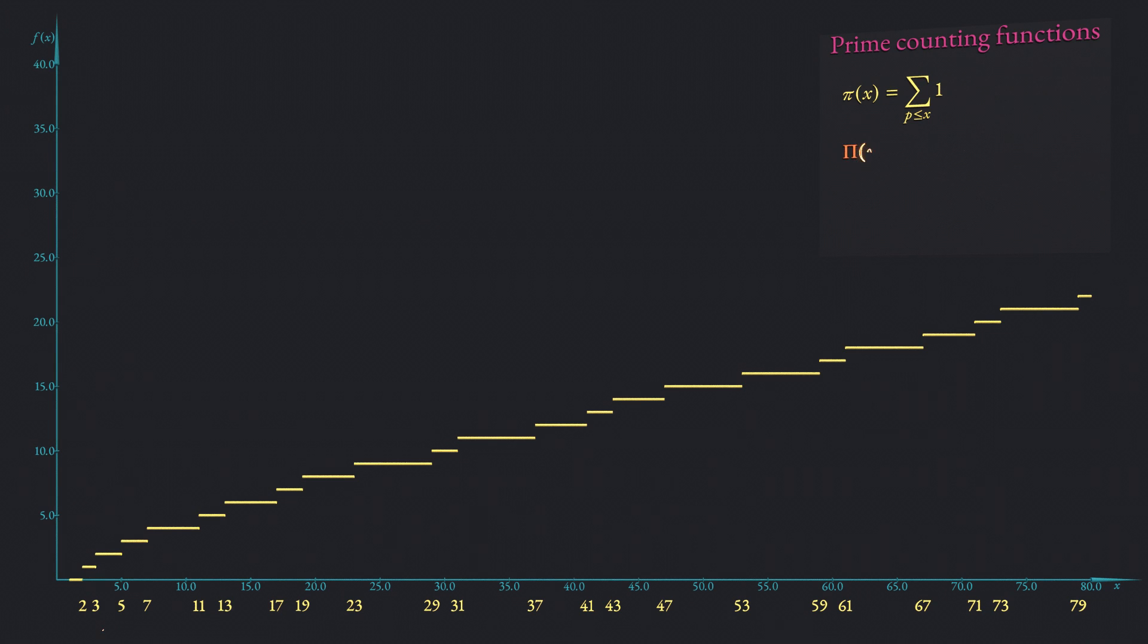Riemann introduced a slightly different prime counting function labeled with a capital Π. It does not only step up when x is prime but also whenever x is a power of a prime. The step size is 1 at the position of primes, one half at squares of primes, one third at cubes and so on. This prime counting function played a major role in my first video on this topic which the keen among you are recommended to watch as well.